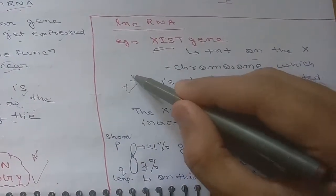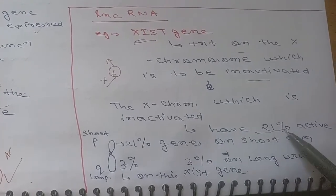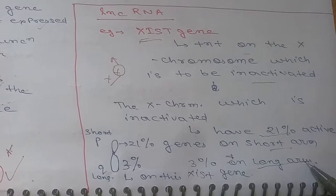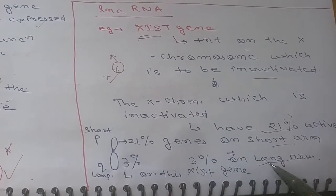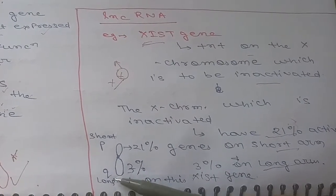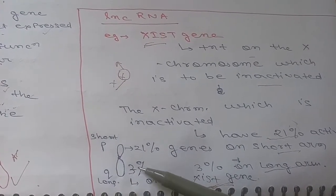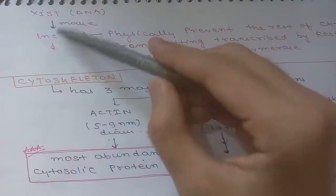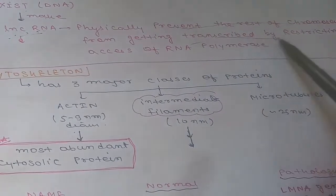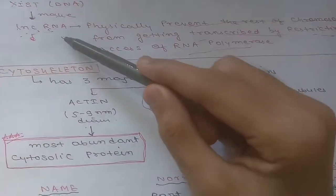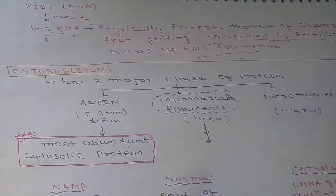In females with two X chromosomes, one X is inactivated. However, even the inactivated X chromosome has approximately 21% active genes on its short arm and 3% active genes on its long arm. Among the 3% active genes on the long arm, the XIST gene is present. XIST produces lncRNA, which physically prevents the rest of the chromosome from being transcribed by restricting access of RNA polymerase, thereby silencing the chromosome.